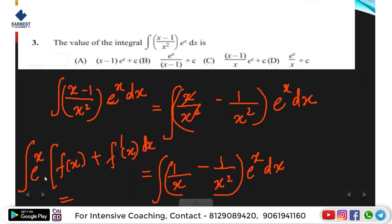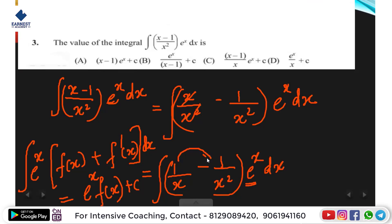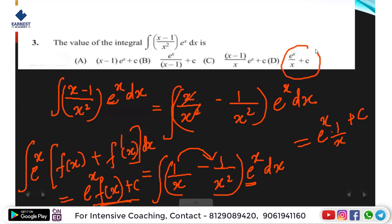The formula is: integral of e raised to x into [f(x) plus f dash of x] dx equals e raised to x times f(x) plus c. Here, 1 by x is f(x), and its derivative f dash of x is minus 1 by x squared. So the integrand matches the formula. Therefore, the answer is e raised to x into f(x) plus c, which equals e raised to x by x plus c. Option d is the answer.